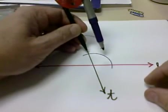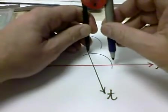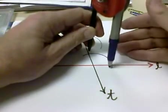We will open the compass the distance across our original angle and we will strike an arc.